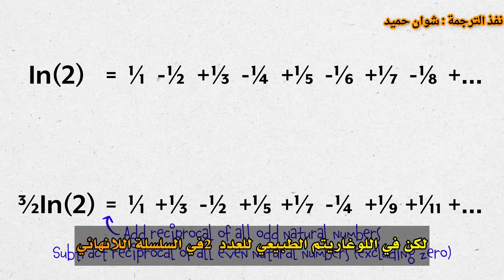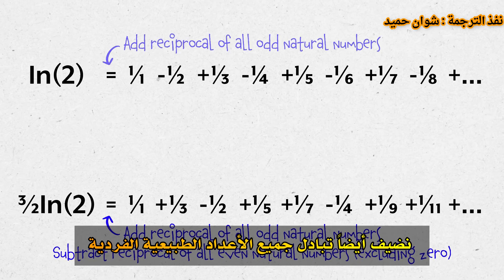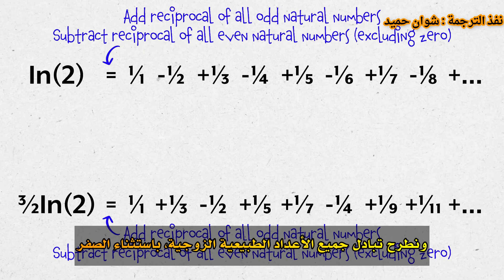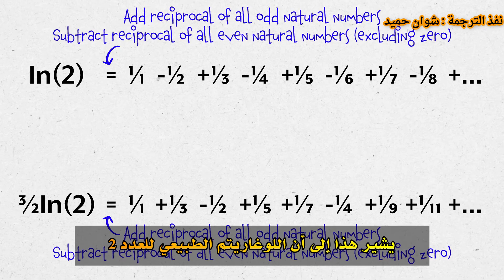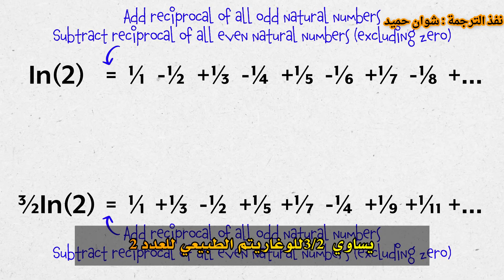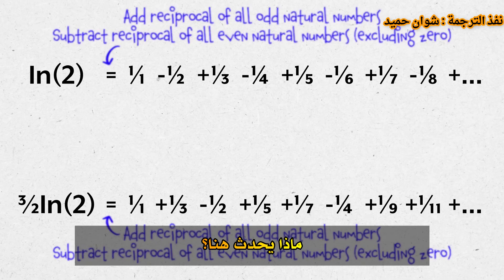But in the ln 2 infinite series, we also add the reciprocal of all odd natural numbers and subtract the reciprocal of all even natural numbers, aside from 0. This suggests that ln 2 equals 3 over 2 ln 2. What's going on here?